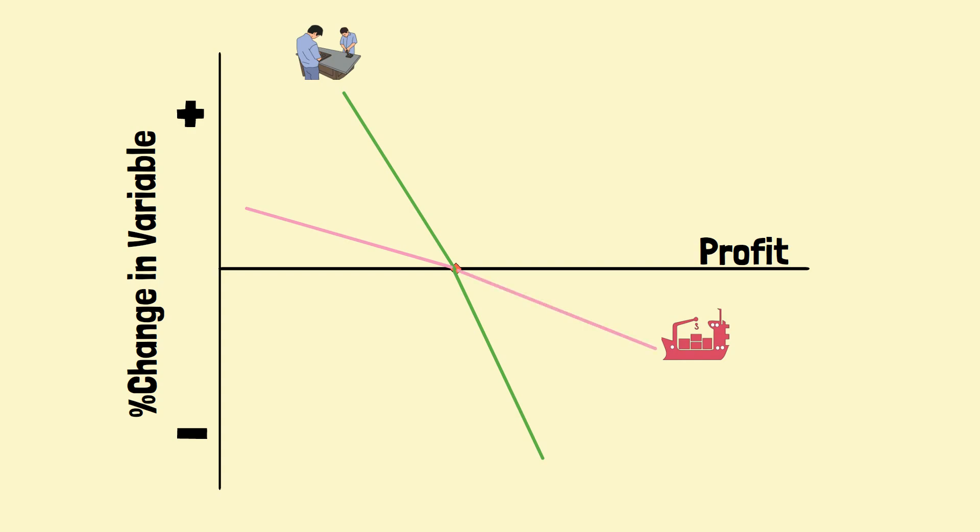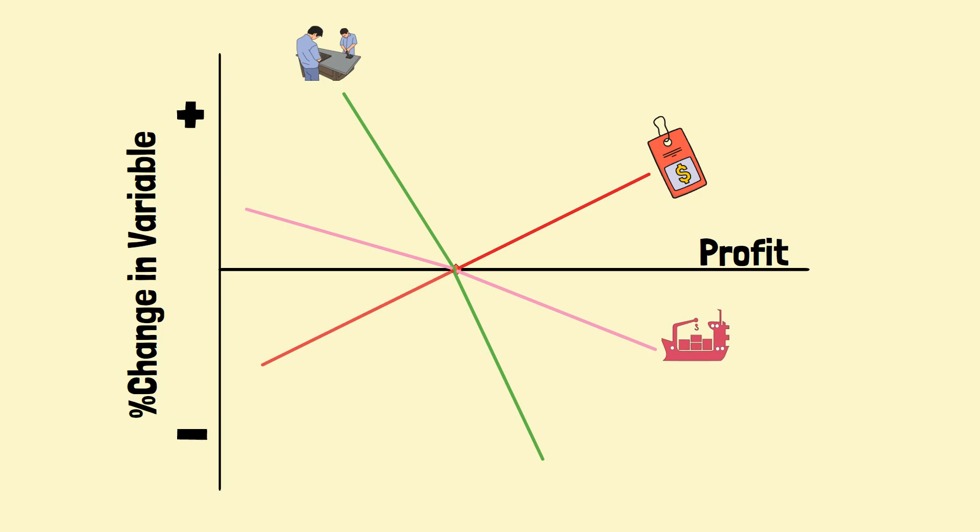If John can increase the selling price, the profit will rise. Of course, if John has to reduce the selling price due to competition, the profit will drop.